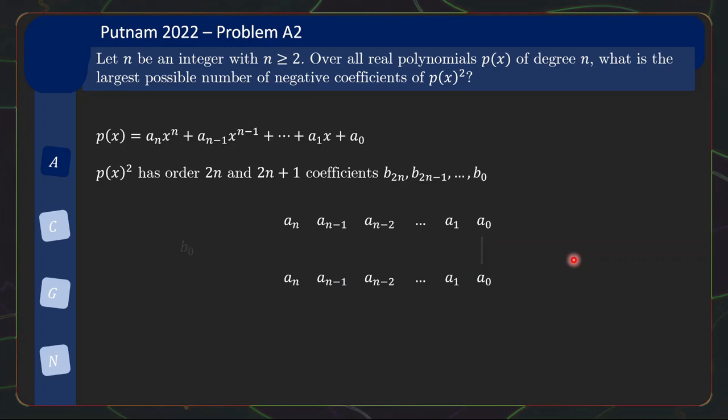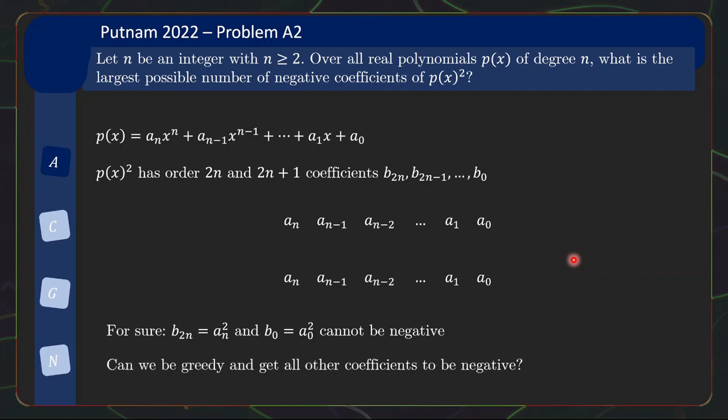And from this, we can see that very quickly, b_2n, which is a_n², and b_0, which is a_0², definitely cannot be negative. So from the beginning, we know two of the coefficients are definitely out. Can we be greedy and require all the other coefficients to be negative? This is a natural question to ponder, right?